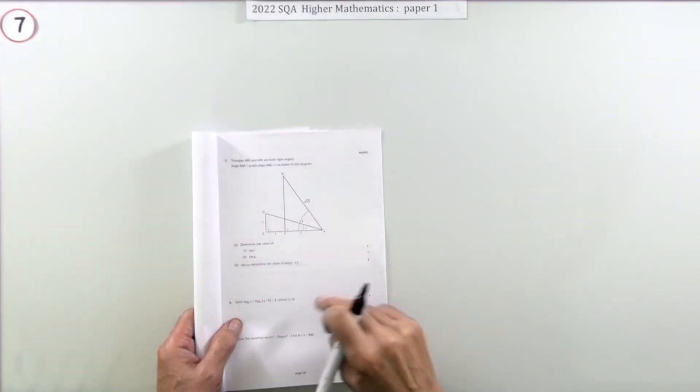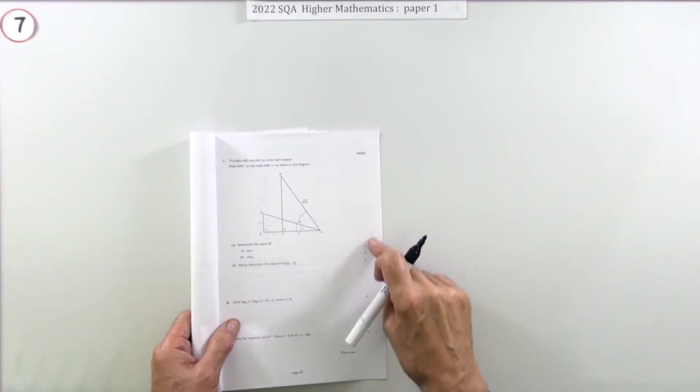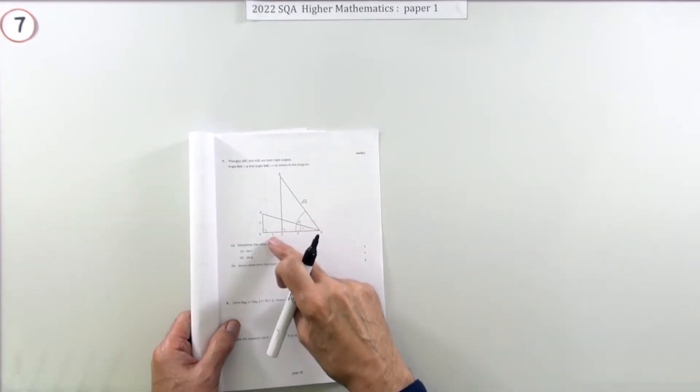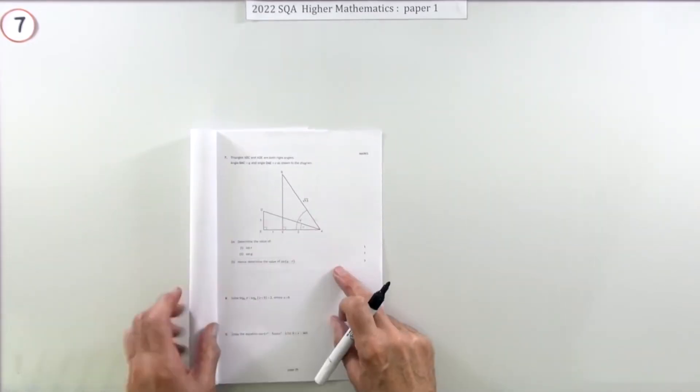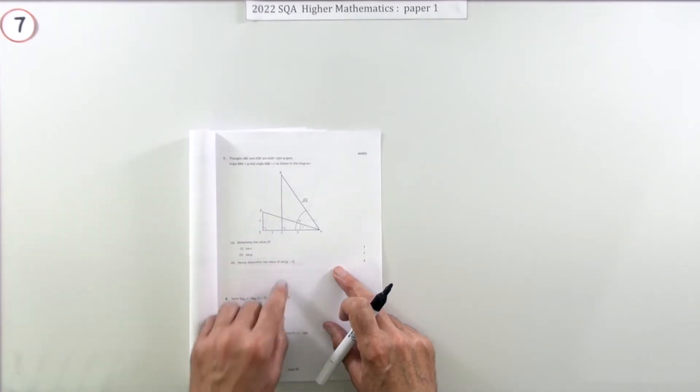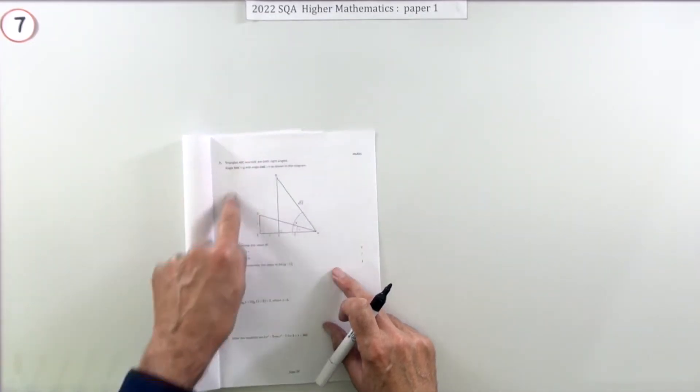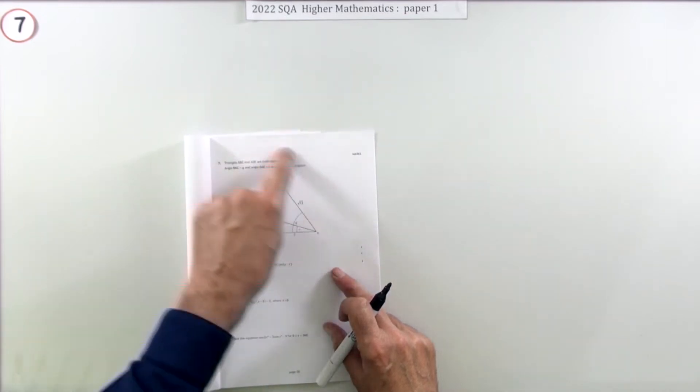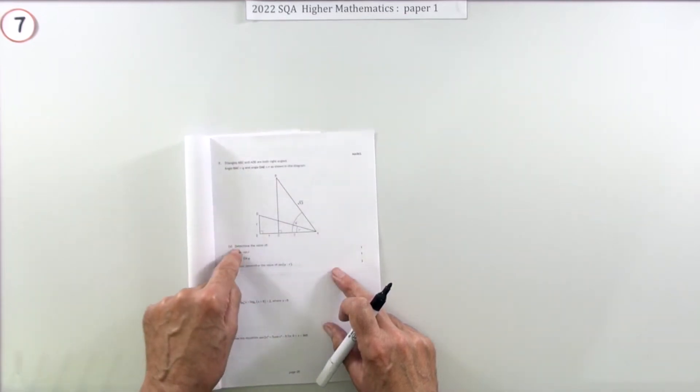Question 7 from the 2022 Higher Maths Paper 1, a 5 mark question. It's in two parts A and B, but really it's just one part. It should just have said what's the value of sine Q minus R, because you would have to find sine R and cos R and sine Q and cos Q in order to do that. But you've got this diagram here to unravel to find the individual sines and cosines of the R's and Q's.